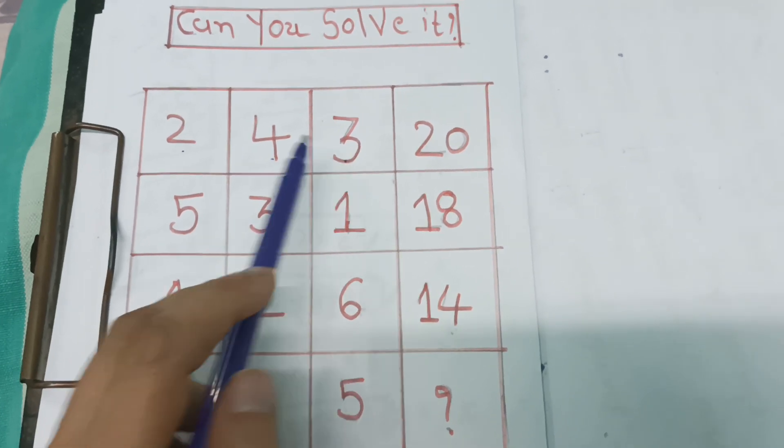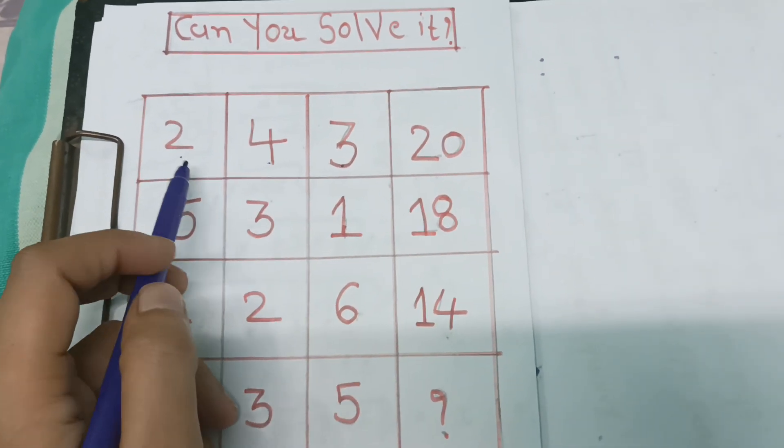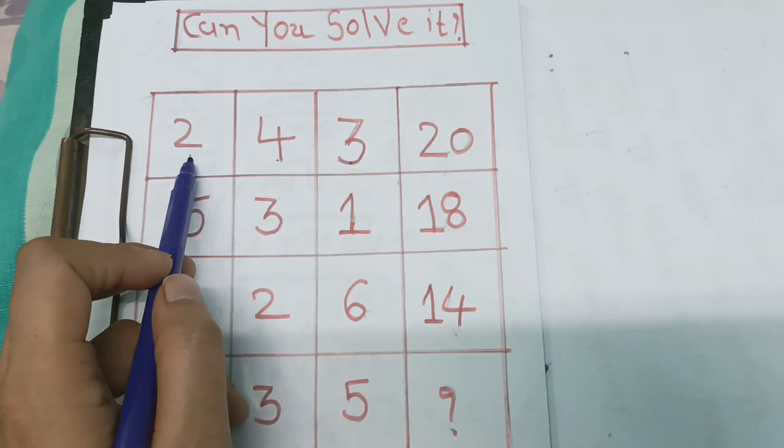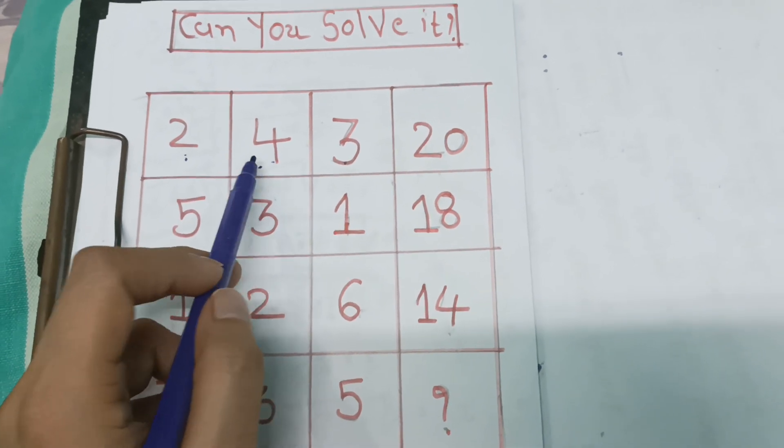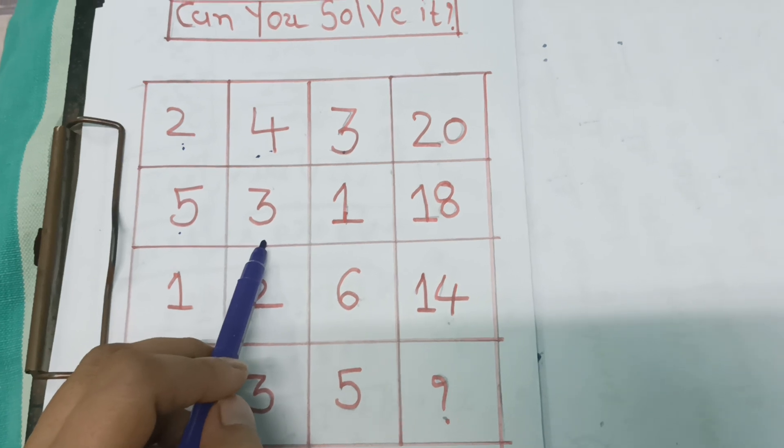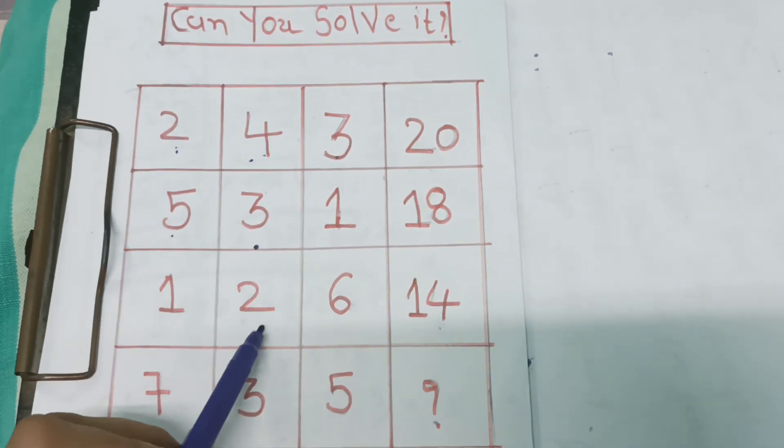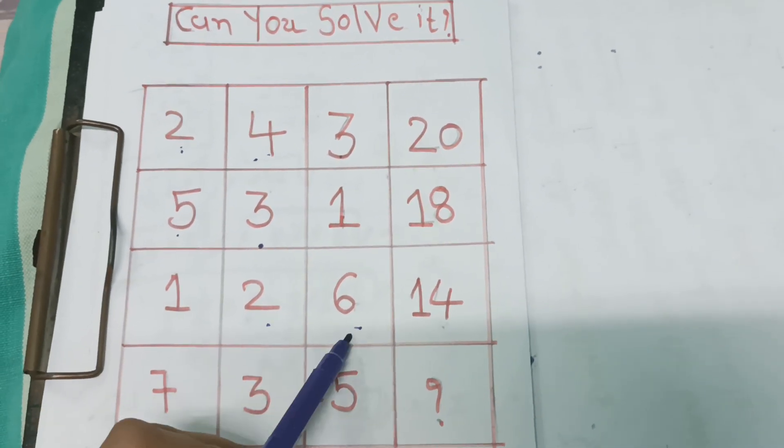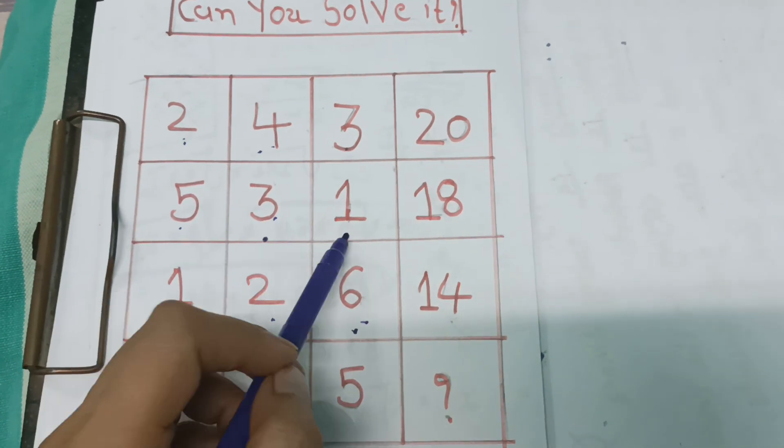So if I took this 2 to the 4, but here 5 to the 10, so this is not possible here. If I see this and this, 2 to the 3, but here it is not possible.